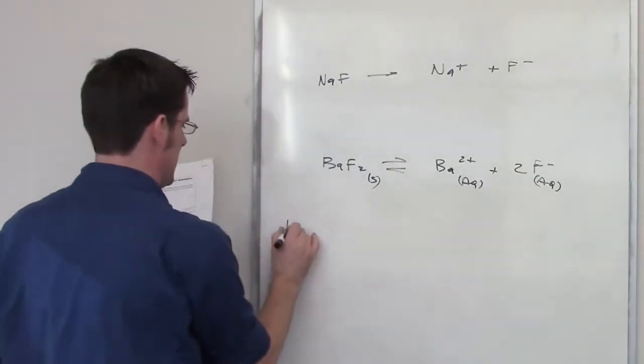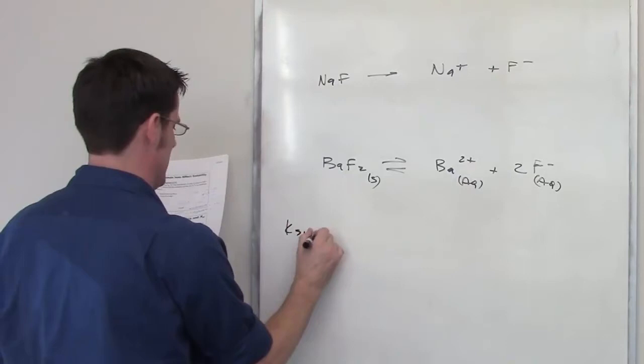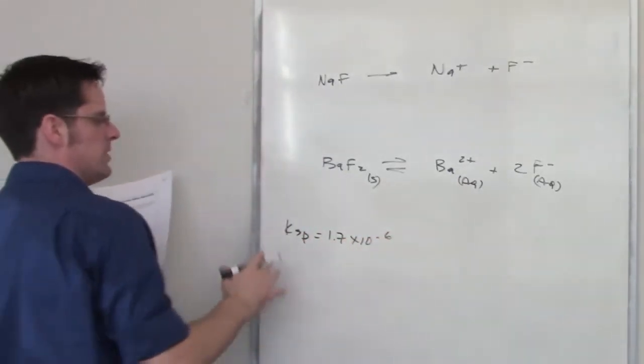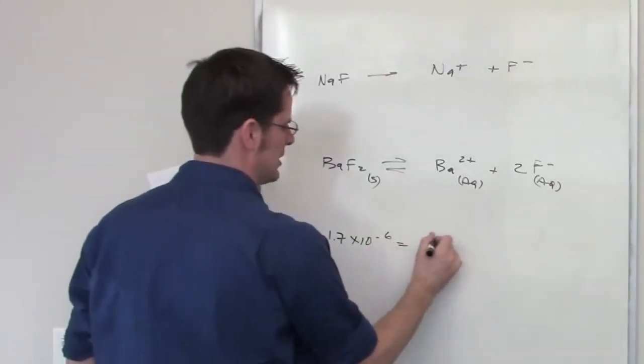It gives me the Ksp for barium fluoride as being 1.7 times 10 to the negative 6. Now, the Ksp value should be equal to this expression: